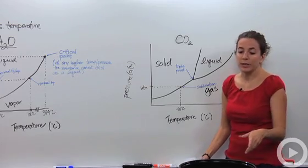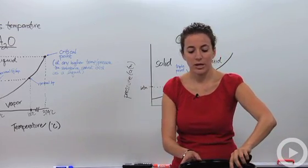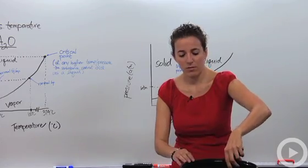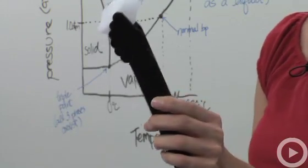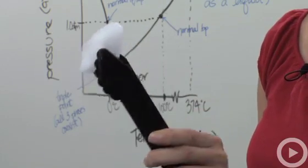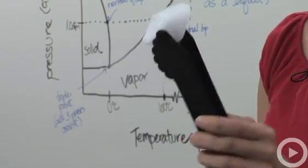The reason we call it dry ice is because here we have some dry ice actually with us. Let me get some out for you. Alright. The reason we call it dry ice is because we have it in its solid form, but yet it sublimates, meaning it goes straight from solid to gas.